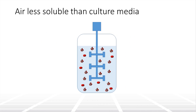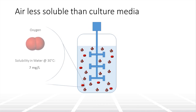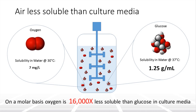However, oxygen is sparingly soluble in culture medium. Thus, how the sparging of oxygen is conducted becomes very critical. Low oxygen solubility and its rapid uptake by cells means that dissolved oxygen concentration can limit cell growth.